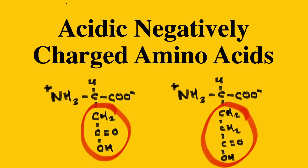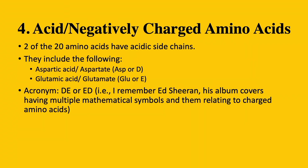Hi everyone, welcome back. Today's video will be about acidic, negatively charged amino acids. This group contains two of the 20 amino acids: they include aspartic acid, or aspartate if it's deprotonated, and glutamic acid, or glutamate if it's deprotonated. In normal physiological conditions, both would be deprotonated since they are acids.